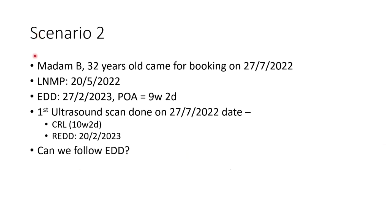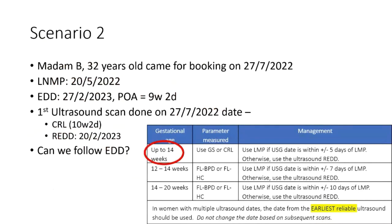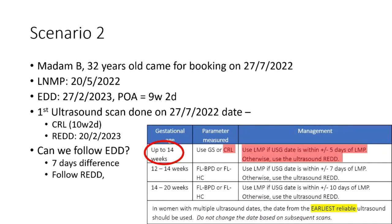Scenario two: Madam B, same booking date of 27th July, same LMP of 20th May, same calculated POA of nine weeks two days. On scan, CRL shows 10 weeks two days, and the ultrasound EDD is 20th February. The difference between 20th February and 27th February is seven days — more than five days — so we must use the ultrasound REDD. The new date is 20th February 2023. On 27th July, she is documented as 10 weeks two days POG.